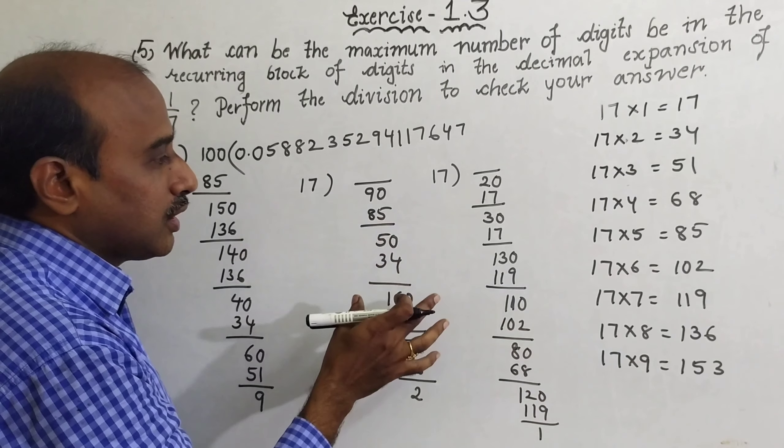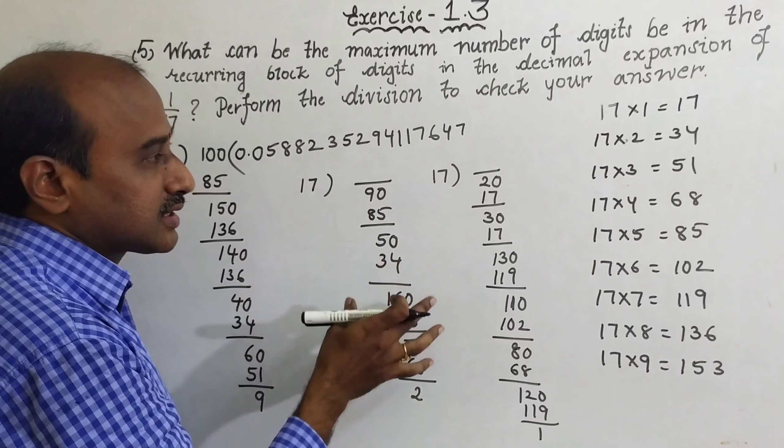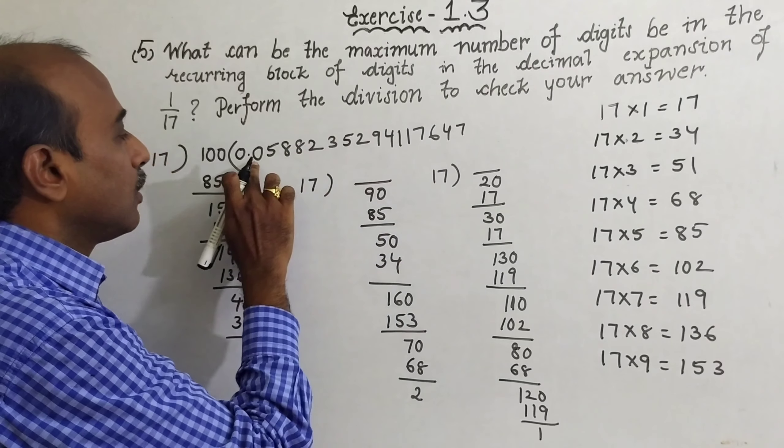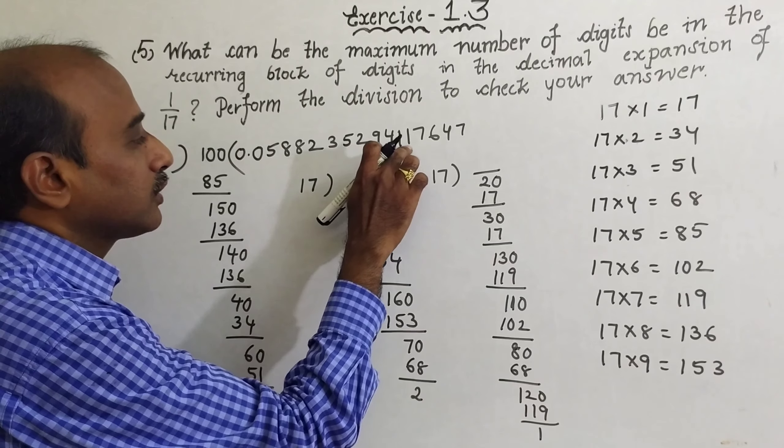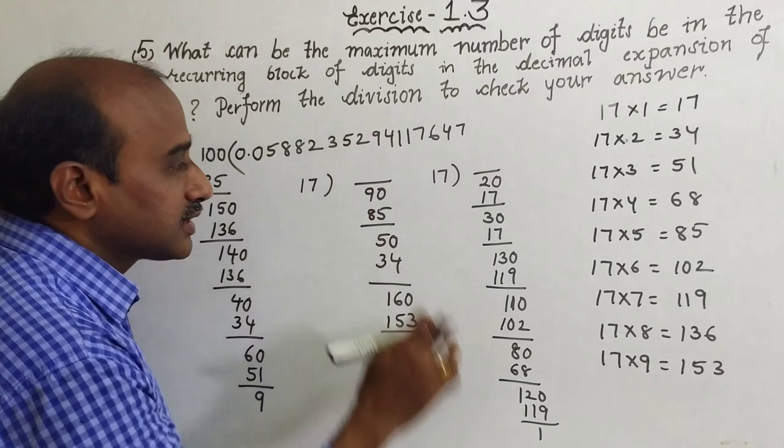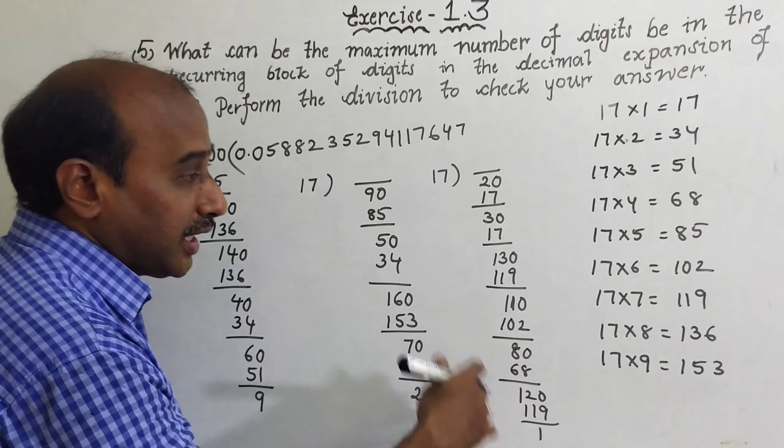So here you can observe the number of digits after the decimal point, 16. 1, 2, 3, 4, 5, 6, 7, 8, 9, 10, 11, 12, 13, 14, 15, 16 digits. These 16 digits will repeat again.